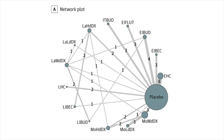A network plot essentially gives you an overview of all the treatment options included in the analysis. Each circle, also called a node, represents a treatment option. The size of the node is proportional to the number of infants randomized to that treatment option overall. A straight line connecting two nodes denotes that a head-to-head trial has been conducted between the two treatment options, and the thickness of the line is proportional to the number of head-to-head trials conducted between those two options.